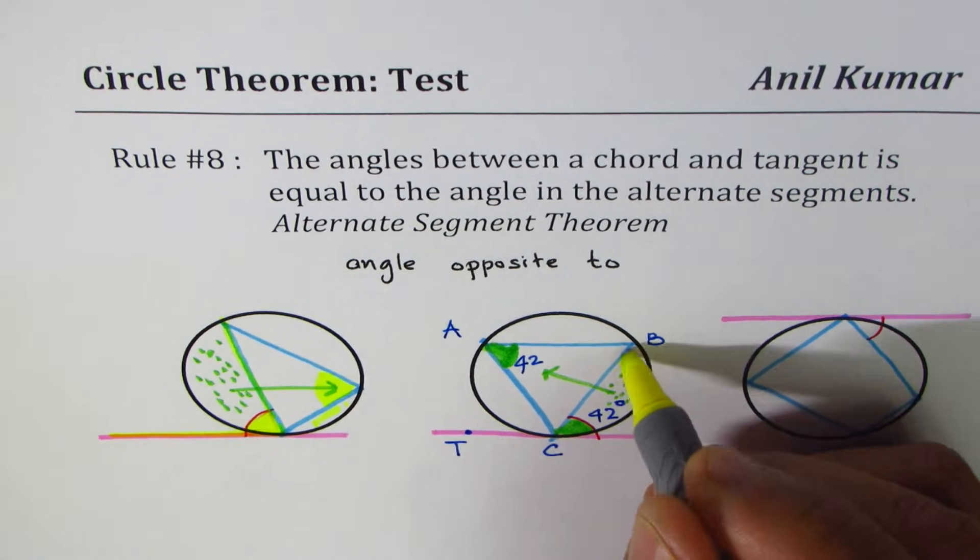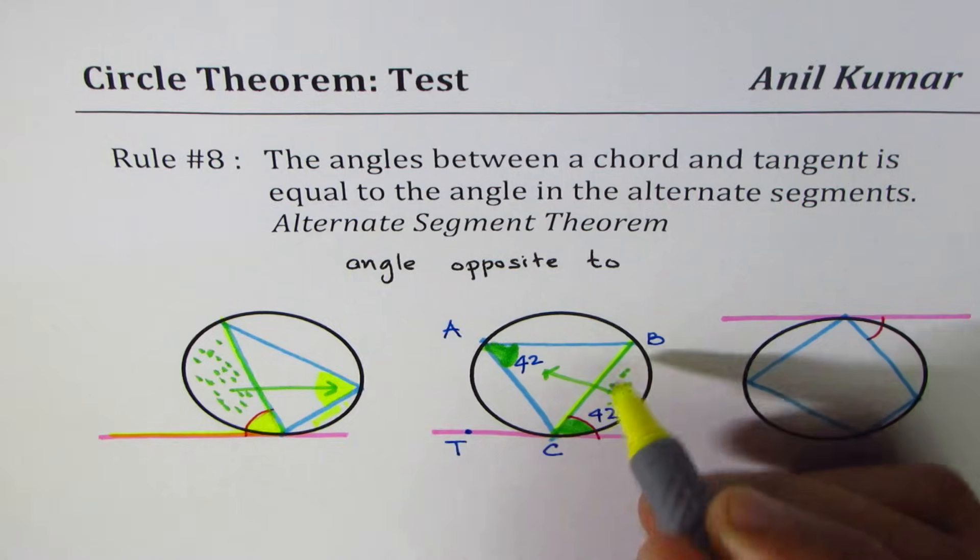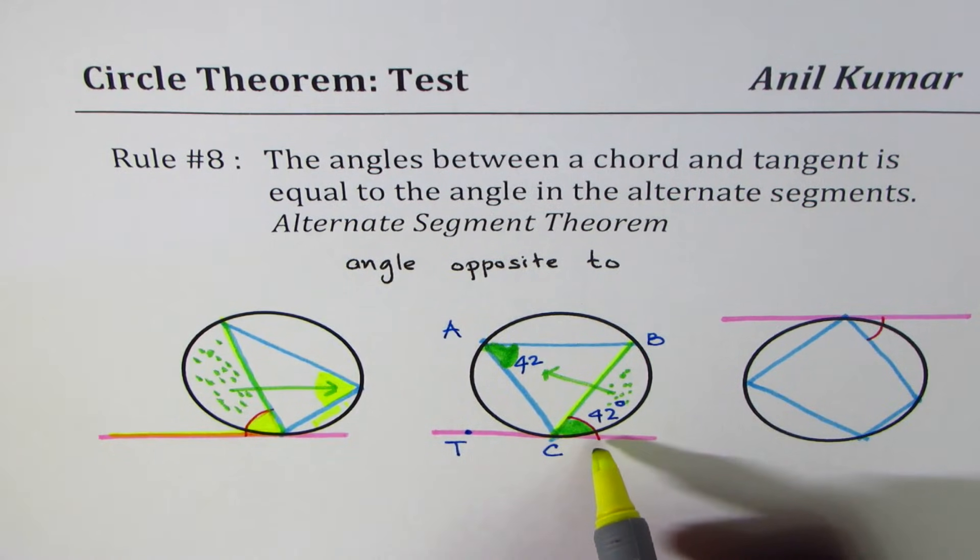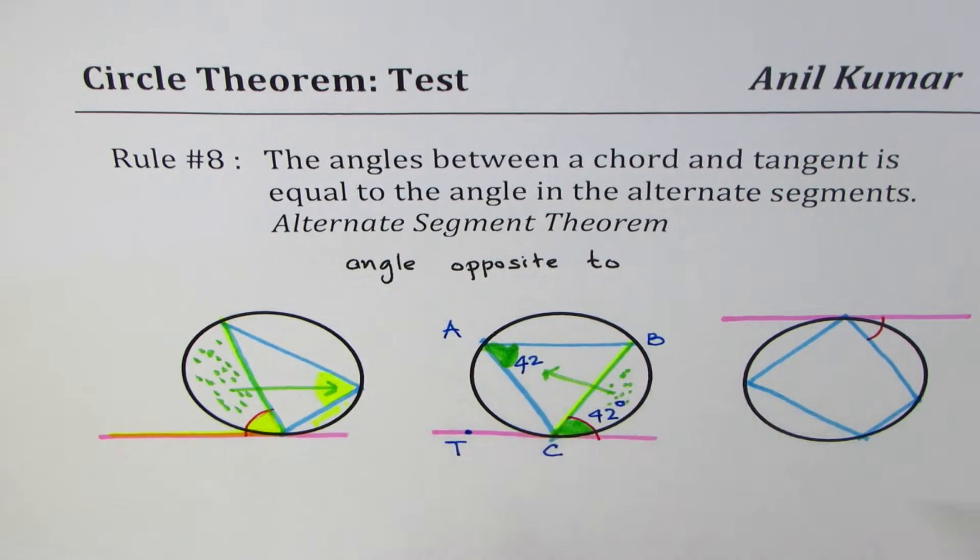Alternate segment means we are talking about the chord BC. So what BC makes with this alternate means here, the other one, the alternate which is this one, not this. That is how you could see it. Now here is a test question for you.